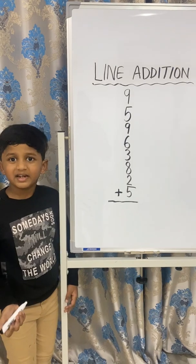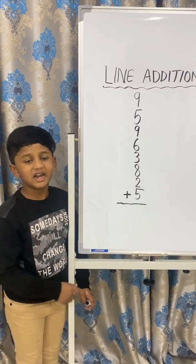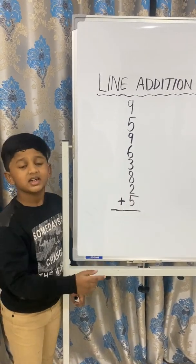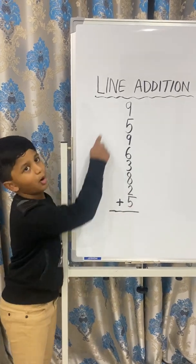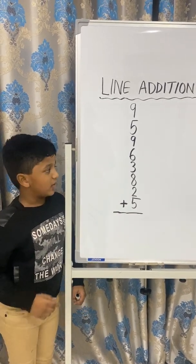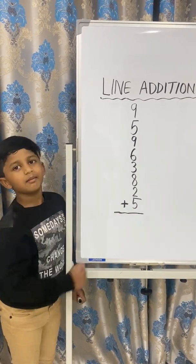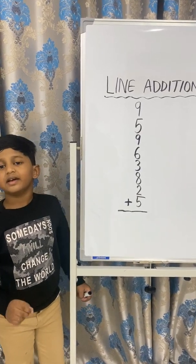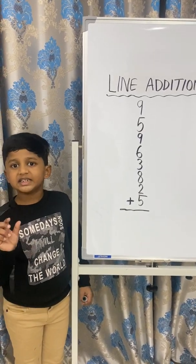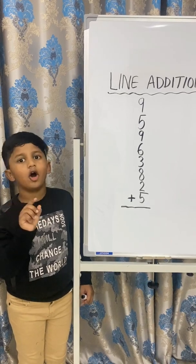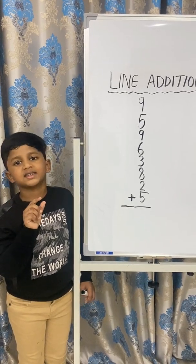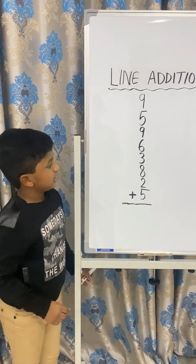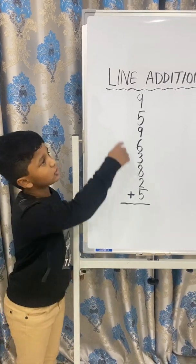The method is: first, we will add the numbers one by one from the bottom to the top. And while adding the numbers, if we get a two-digit result, we consider the tens place as a dash — or you can consider it as a dot. Let's see how to solve this sum.